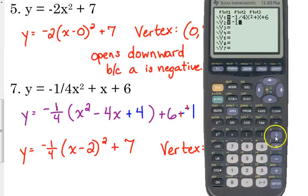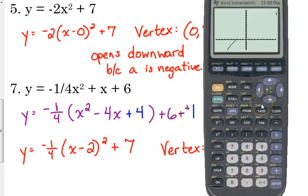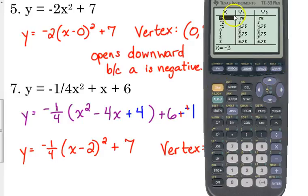Negative 1/4 (x - 2)² + 7. So there's the graph. I don't see another one. I'm going to double check in my table.